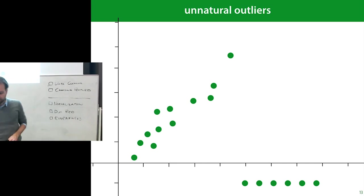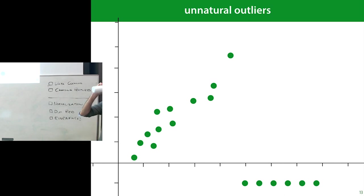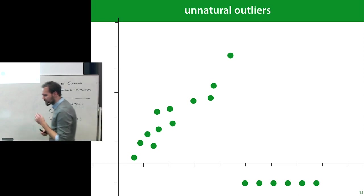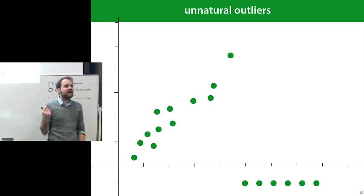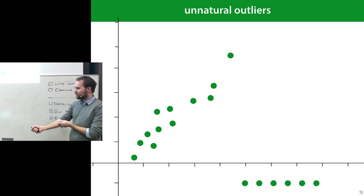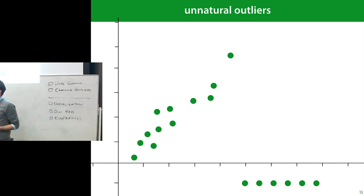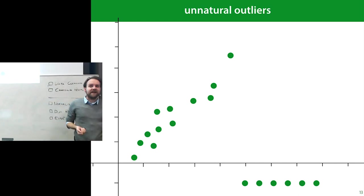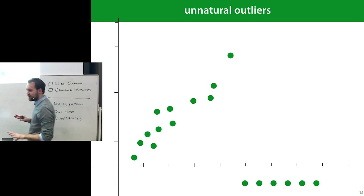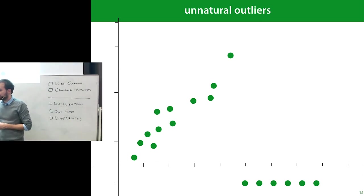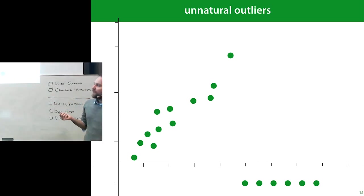Which brings us to outliers — sometimes you have instances in your data that don't look like the other instances. Before going into that, a point I always forget to include: detecting outliers requires you to actually look at your data. I see a lot of students who just load a table into Pandas and stick it into a machine learning model. Ideally you would look at your data first — a large part of a data science project is looking at your data to figure out what it looks like, what the patterns are, and what you can learn from it.